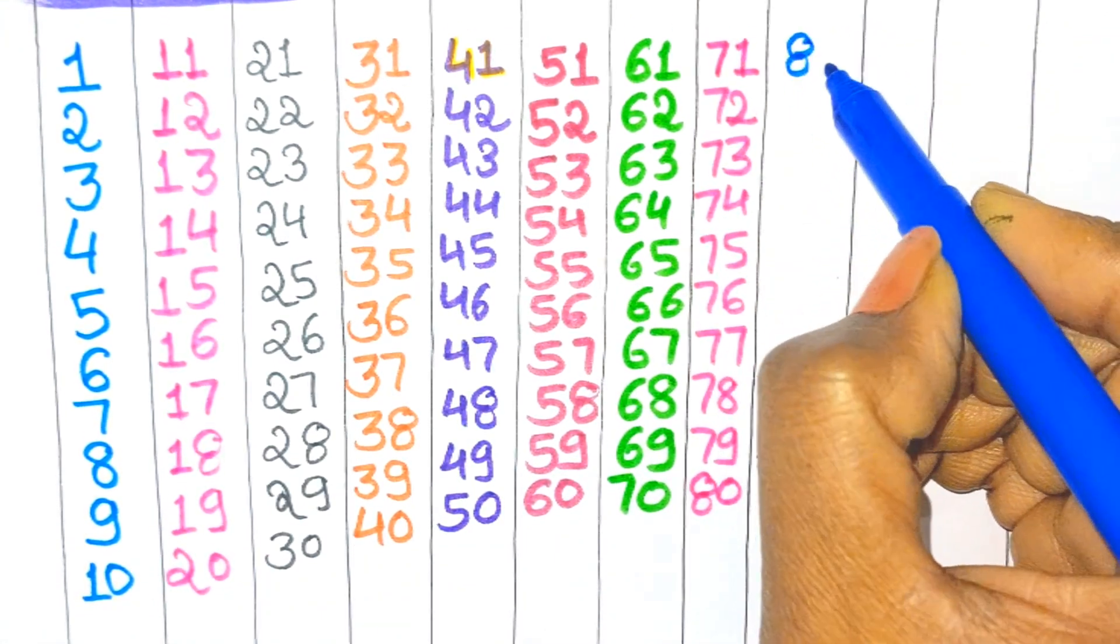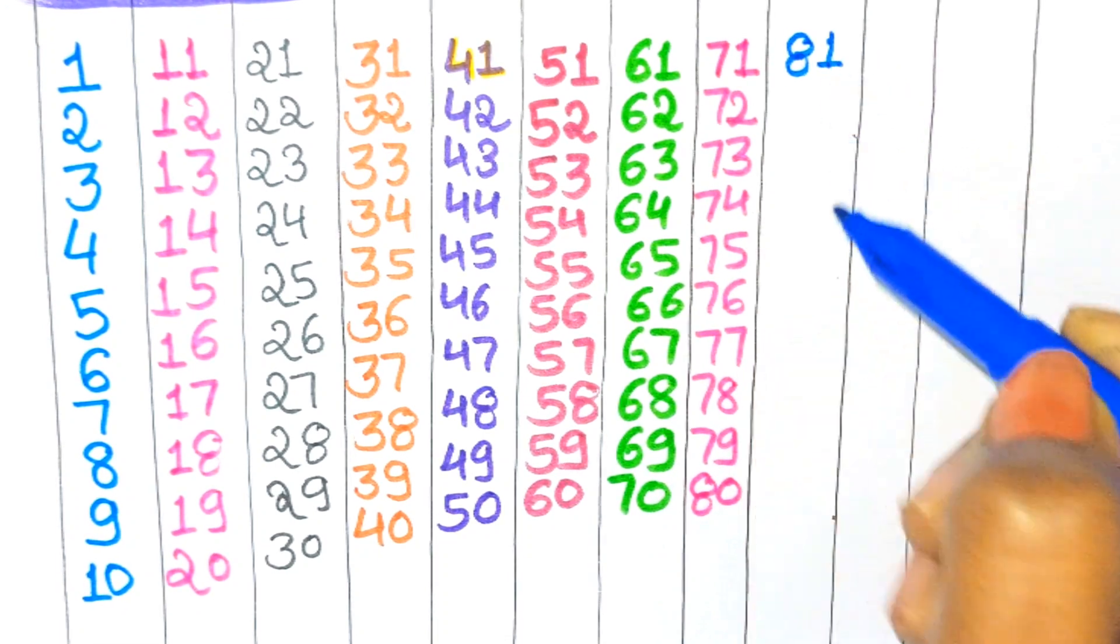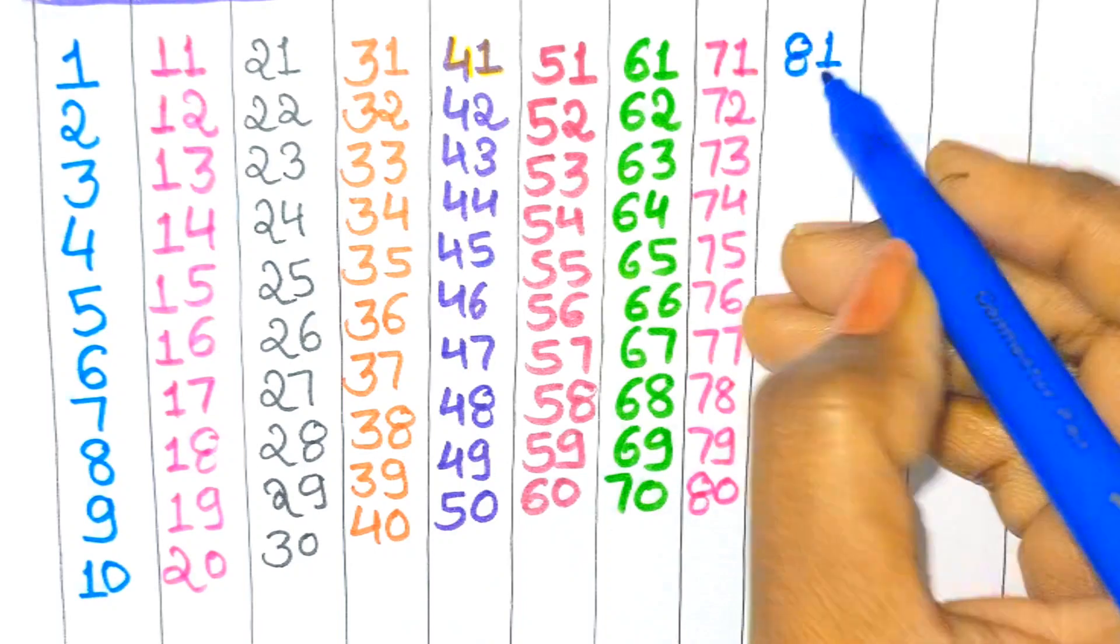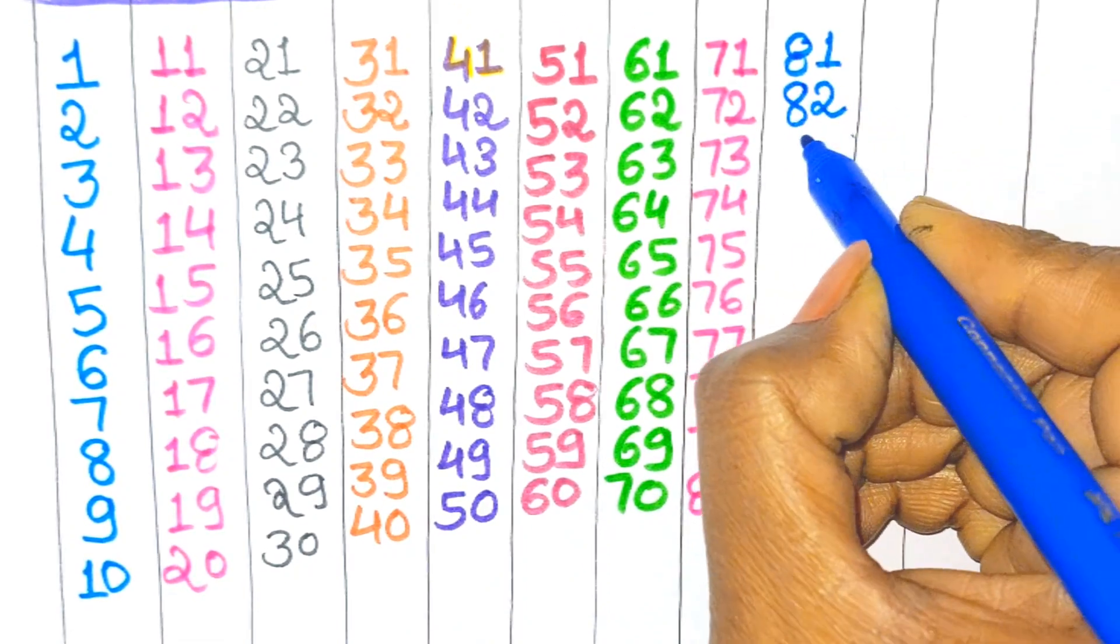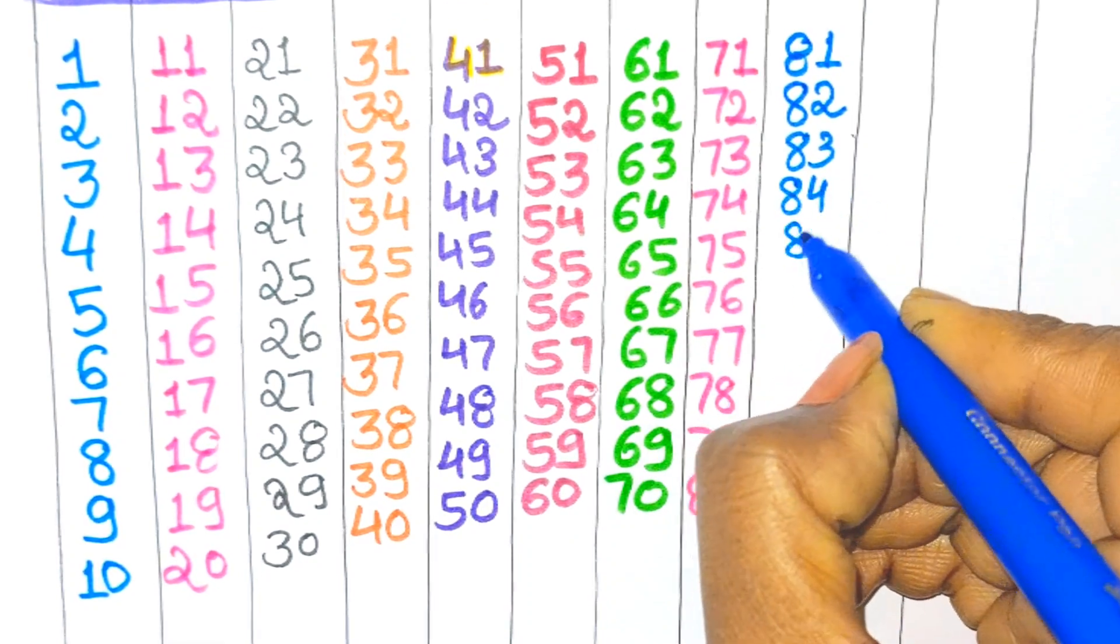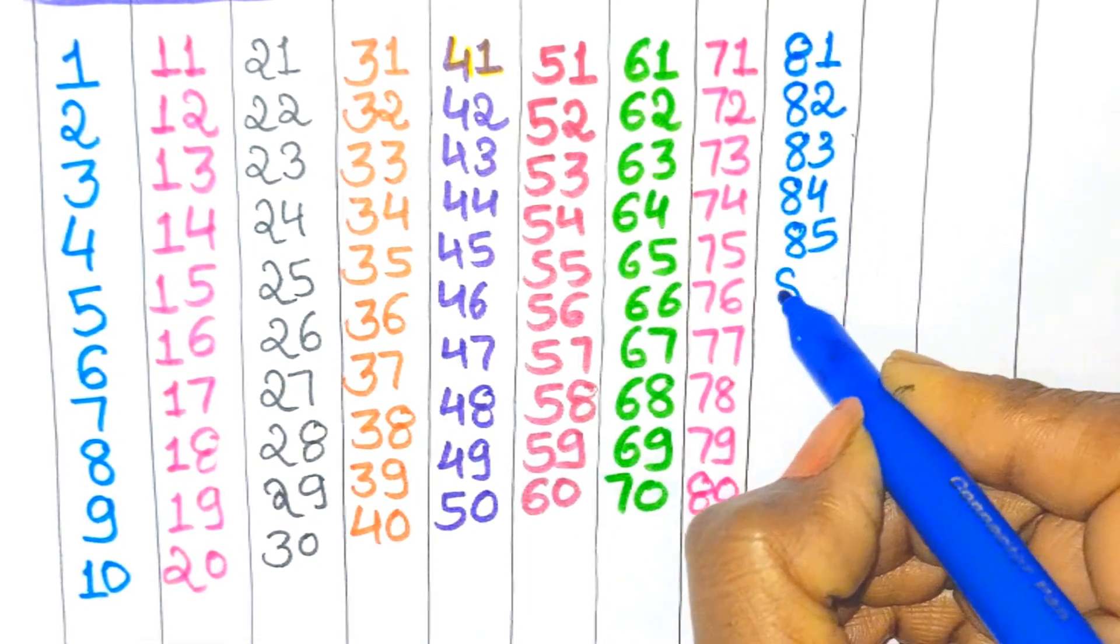Now when we add one in place of zero in eighty, what will this be? Eighty plus one - eighty one, eighty two, eighty three, eighty four, eighty five, eighty six.